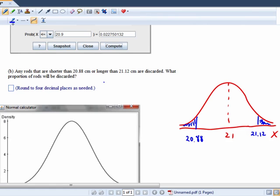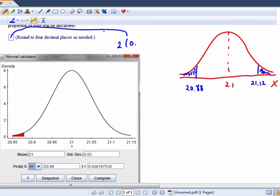So the area right there is going to be two times 0.0082, and so we get 0.0164.